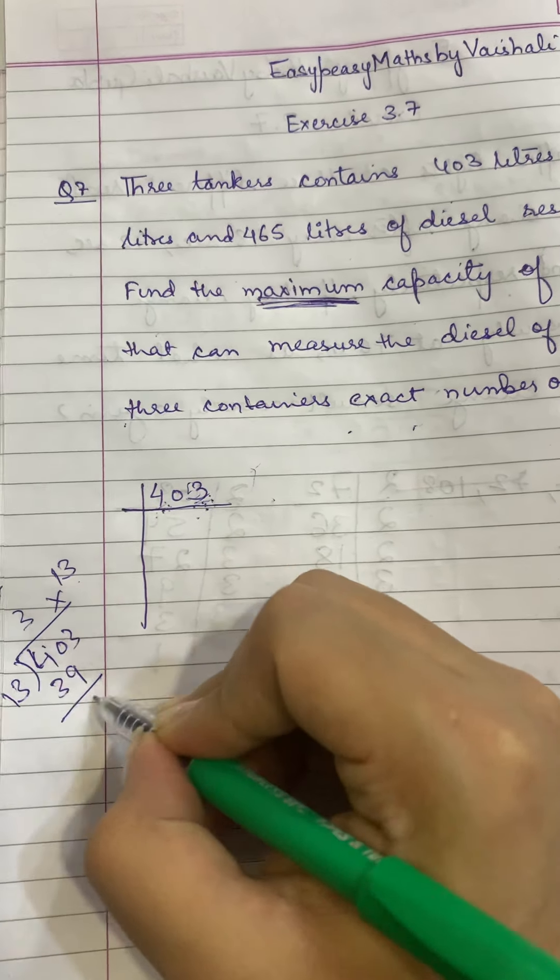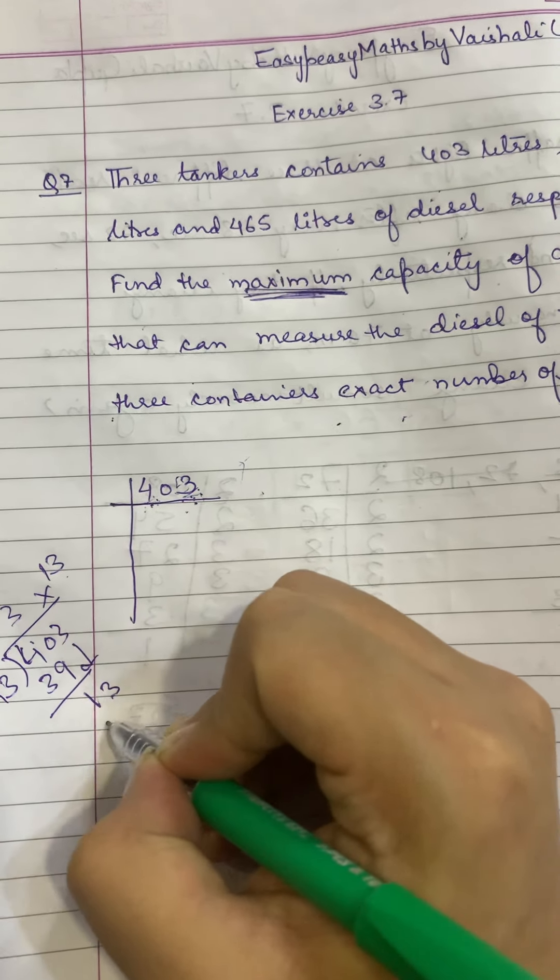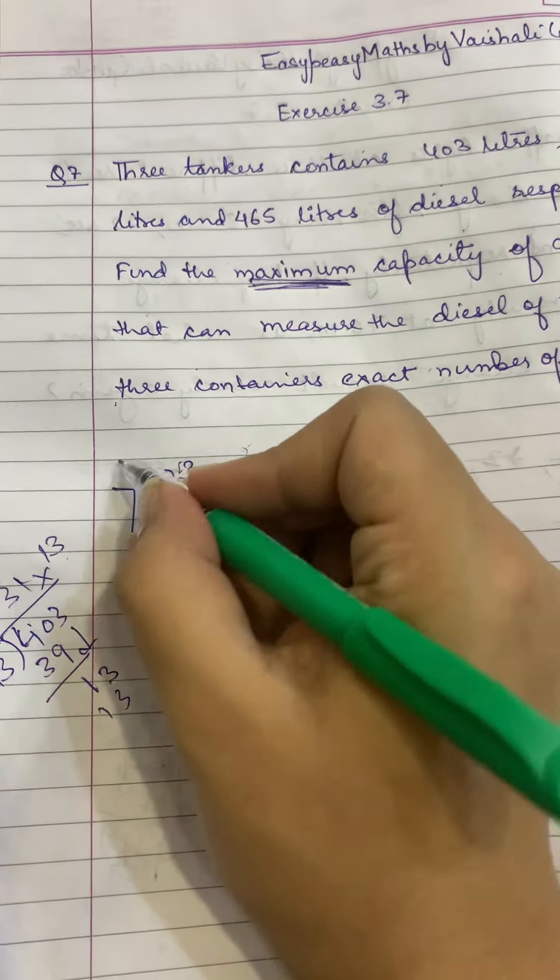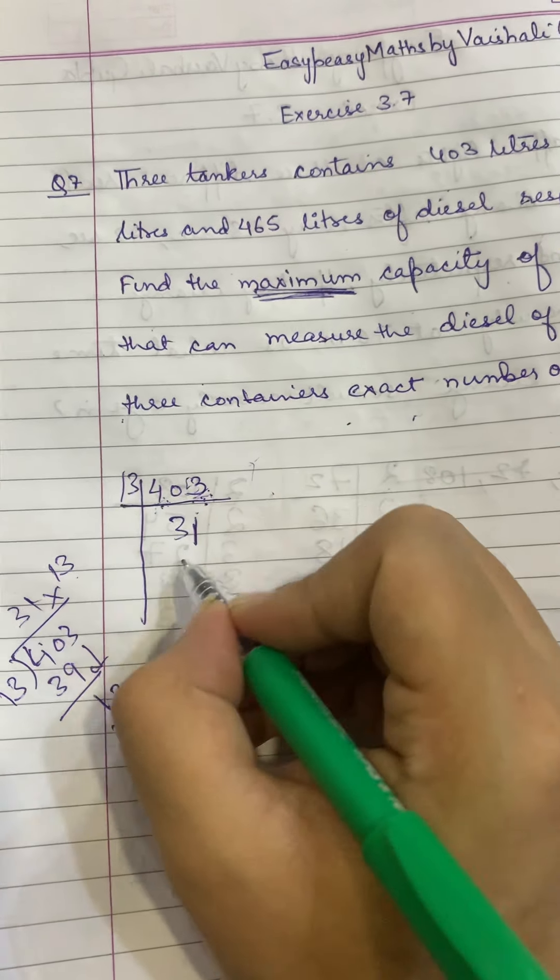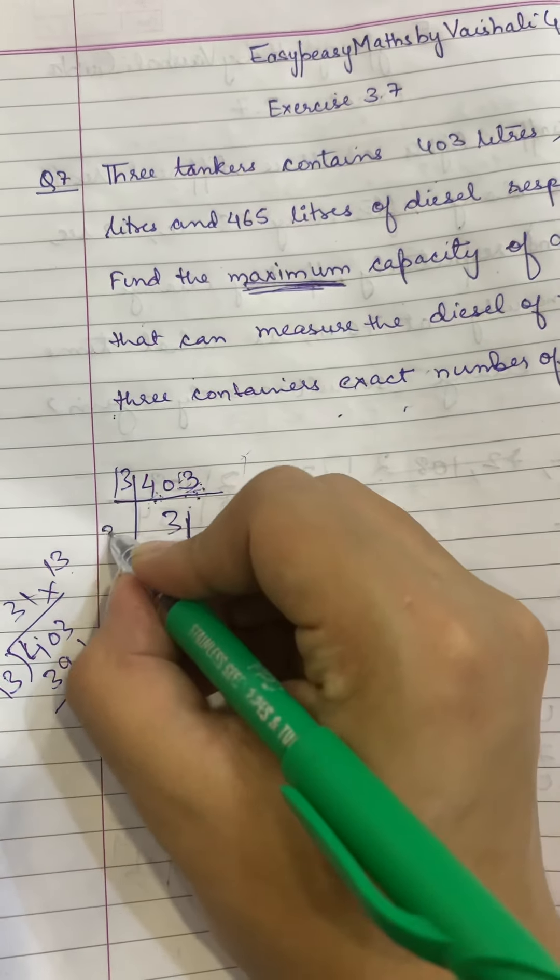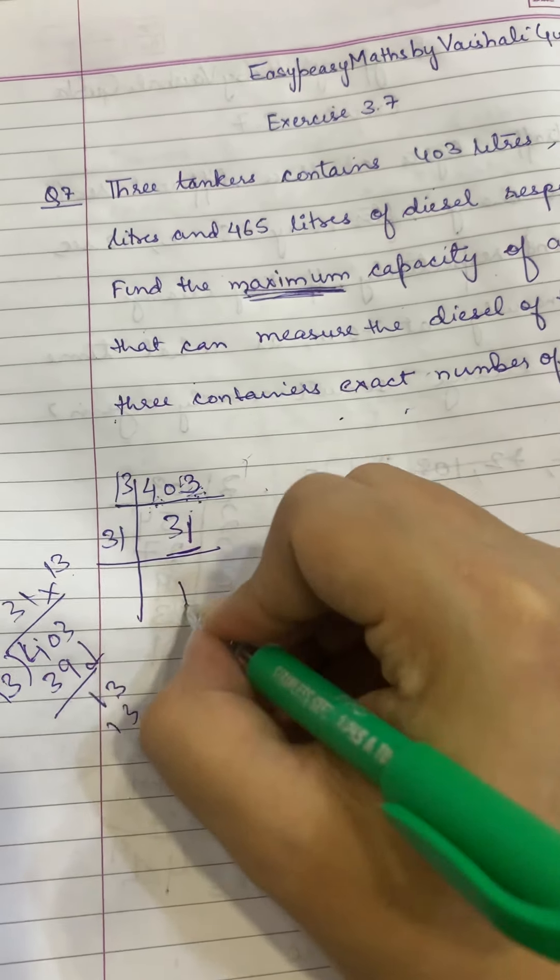So it is 39. Here we divide by 13, so it is 13 and here 31. 31 is a prime factor, so it is 31.